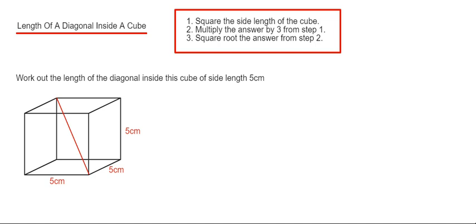So to do this we can use the three steps in the red box. Step one, we square the side length of the cube. Step two, we multiply this answer by three.